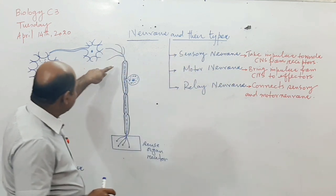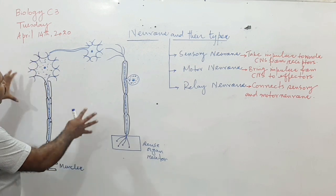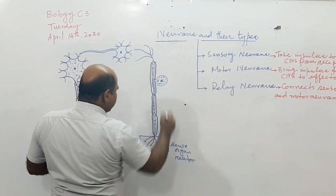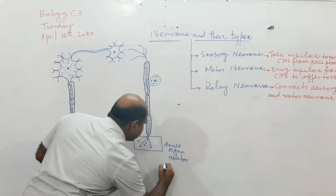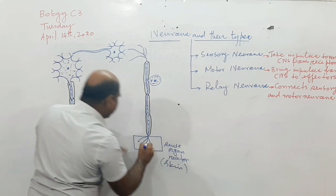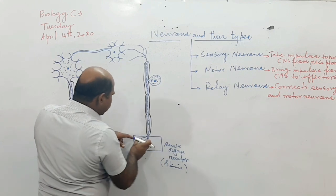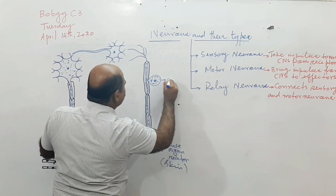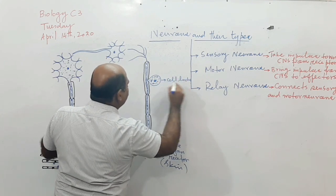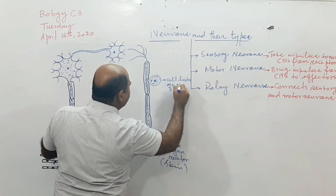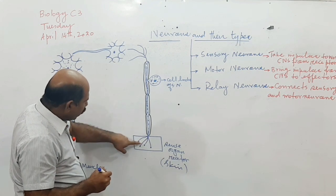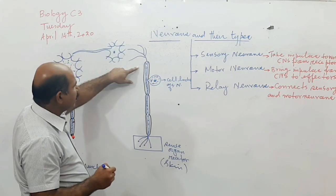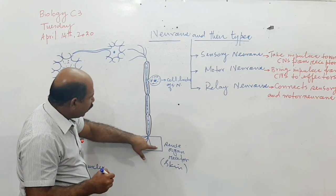Here is the same diagram, but now I have attached all three different types of neurons and will label them one by one. This can be skin — so this is the skin — and from the skin the message is taken in the form of nerve impulses and comes here. This is the cell body of the sensory neuron.